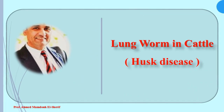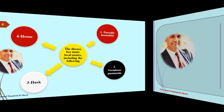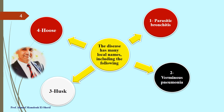Lung Worm in Cattle — Husk Disease. This disease has many local names including: Parasitic Bronchitis, Verminous Pneumonia, Husk, and Hoops.